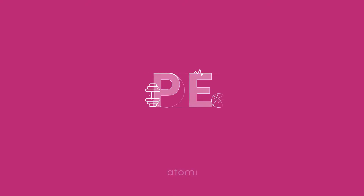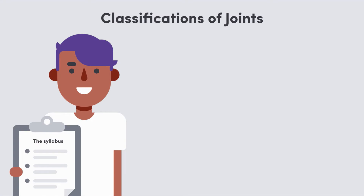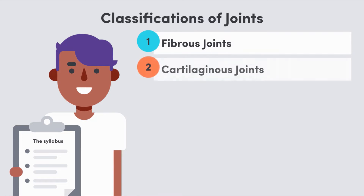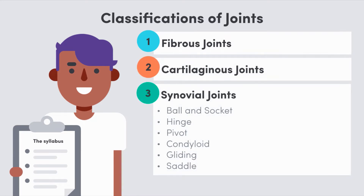Hey everyone, welcome back. In this video we're starting a new topic on joints. It's only a short topic and to start us off, this video will look at classifying the different types of joints. Joints are classified based on how the bones are joined together and the amount of movement the joint permits. There are three main types of joints with different levels of mobility: fibrous, cartilaginous and synovial joints. A little hint before we dive in — often the names of the joint classifications help you to remember some key features about that classification, so look out for those helpful connections.